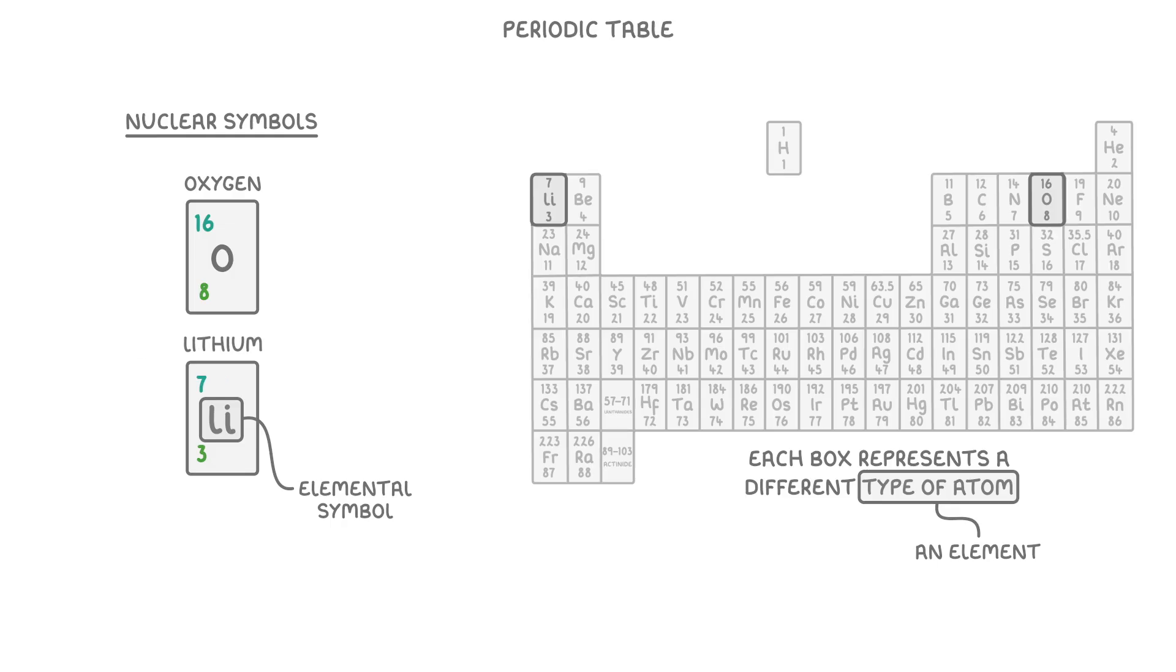Then in the bottom left corner, we have the atomic number, which tells us how many protons the atoms of that element have. So all oxygen atoms have eight protons and all lithium atoms have three protons. And this is actually really important, as it's the number of protons in an atom that determines which element that atom is.